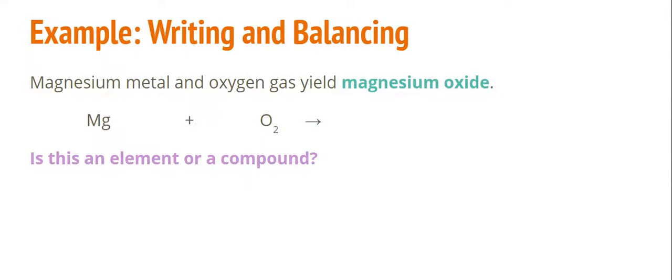Finally, our last section is magnesium oxide. This is our product. We need to determine, is this an element or a compound? I see that this is two different things that are combined. So this is not an element, this is not one thing. This is a combination of two things. So this is a compound.